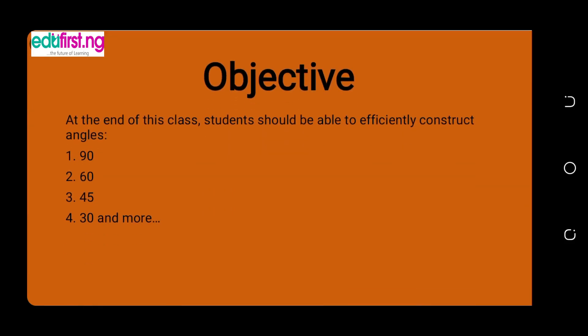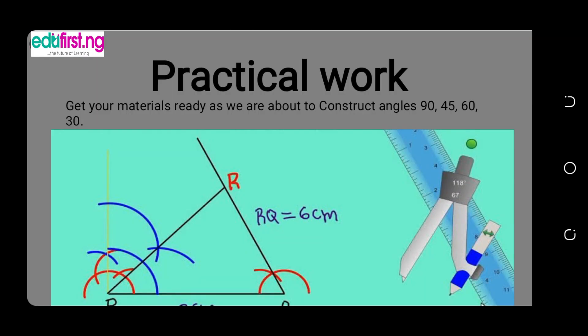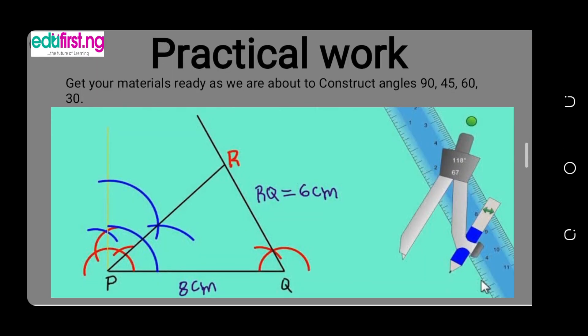The objective of today's class is that at the end, the student should be able to efficiently construct angle 90 degrees, angle 60 degrees, angle 45 degrees, angle 30 degrees, and any other angle. We are going to see how these angles can be constructed, so get your materials ready so that you can follow each instruction and construct any angle you are given.